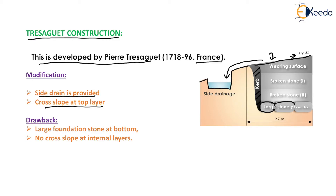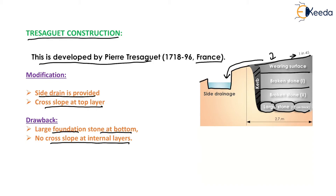The remaining features are similar to Roman development — a curb and large foundation stones at the base are still provided. The drawbacks of Tresaguet construction are: large foundation stones at the bottom (also a drawback of Roman development), and no cross slope at the internal layers — cross slope is only provided at the top layer, not at the other internal layers.